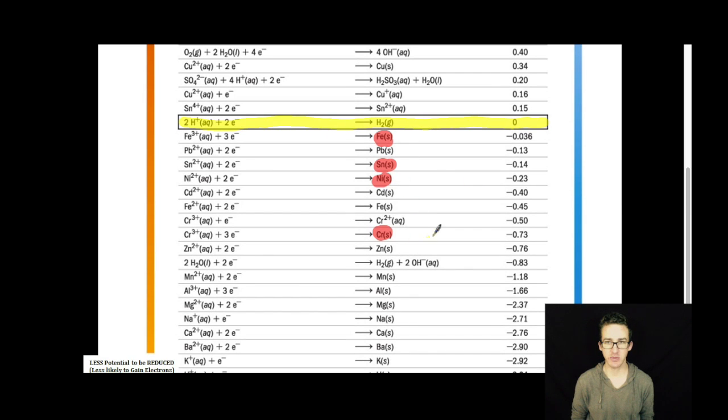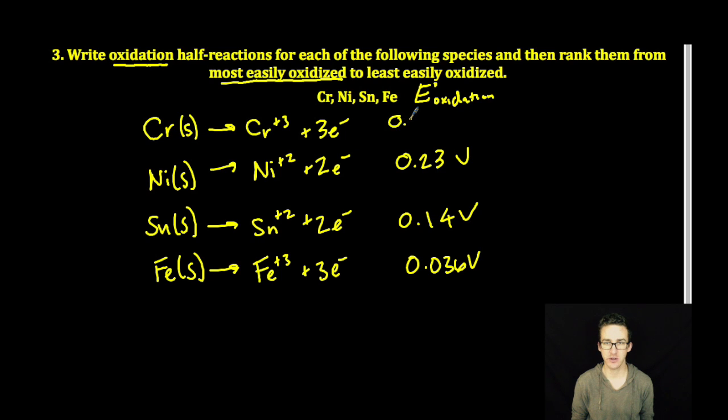Chromium has a reduction potential of negative 0.73 volts, so an oxidation potential of 0.73 volts positive.